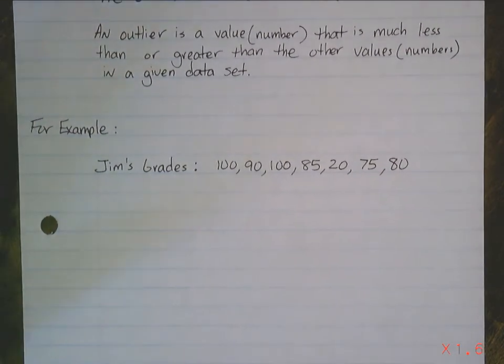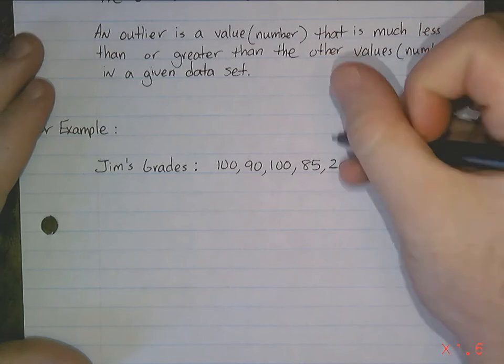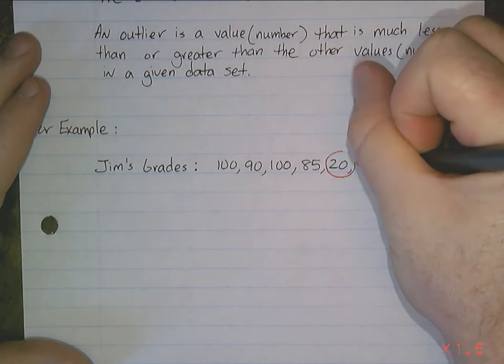If we look at that, let's take a look at our mean, median, mode, and range, and let's see how the outliers affected it. Now the outlier in this case is the 20. It's much, much lower. This is going to be the outlier.